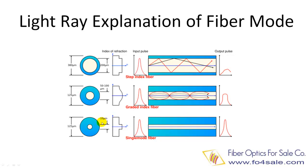On the other hand, the bottom fiber is a single-mode fiber. The typical light ray explanation is that the core is so tiny that only one light ray which is perpendicular at the core interface can enter into the core and is guided. Since there is only one mode, that is why it is called single-mode fiber.